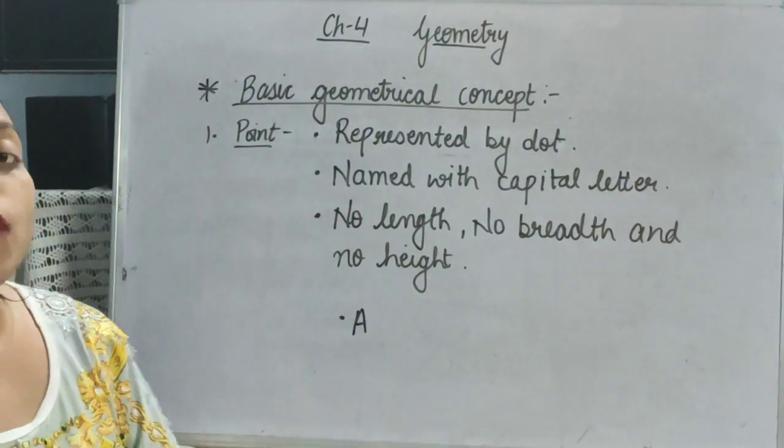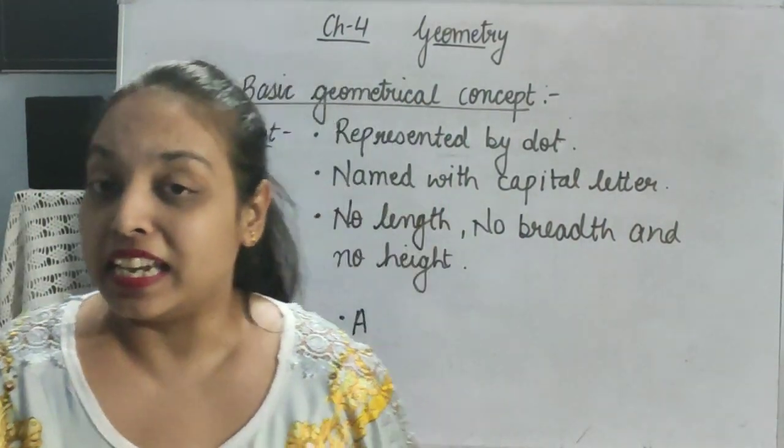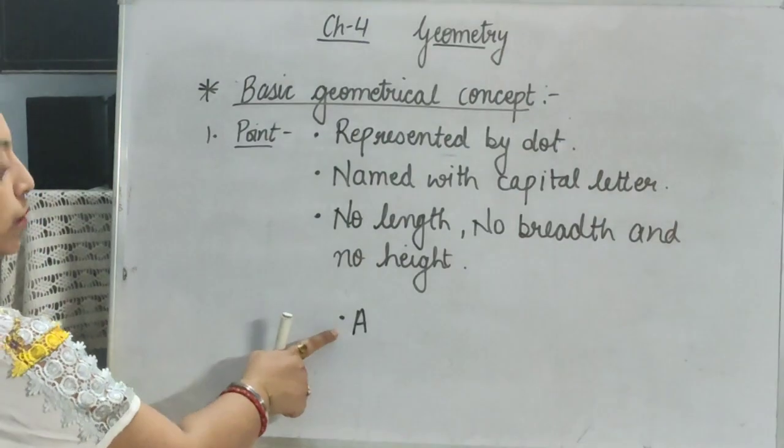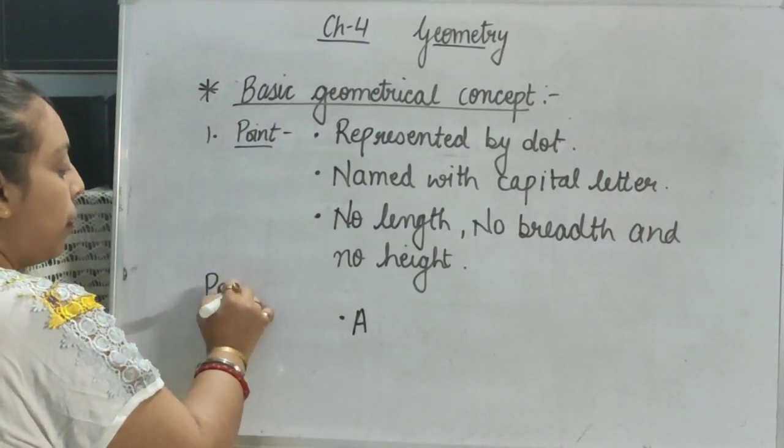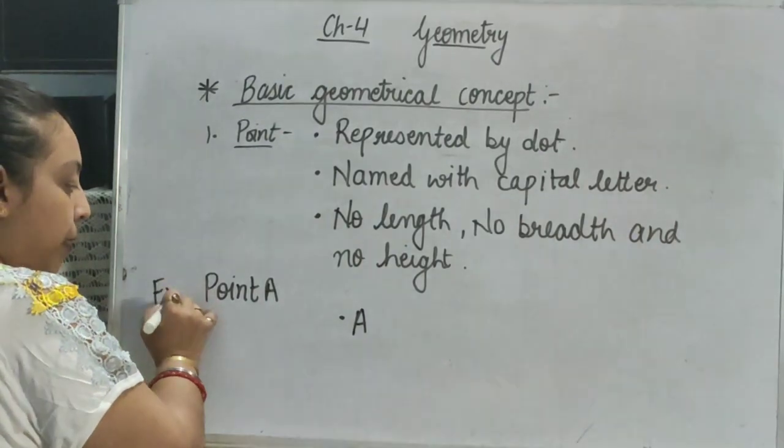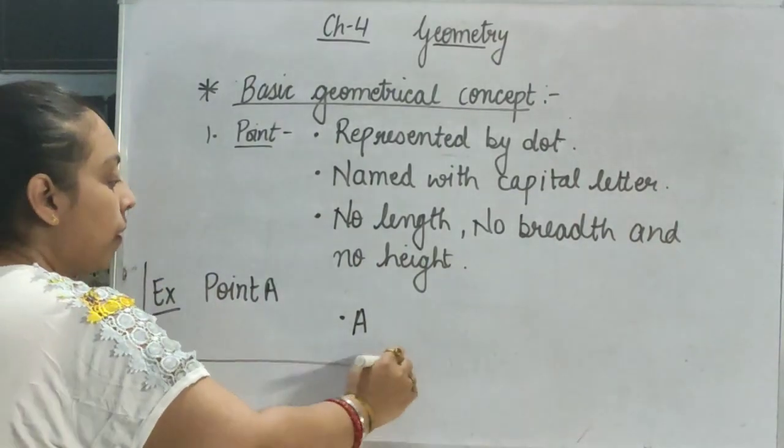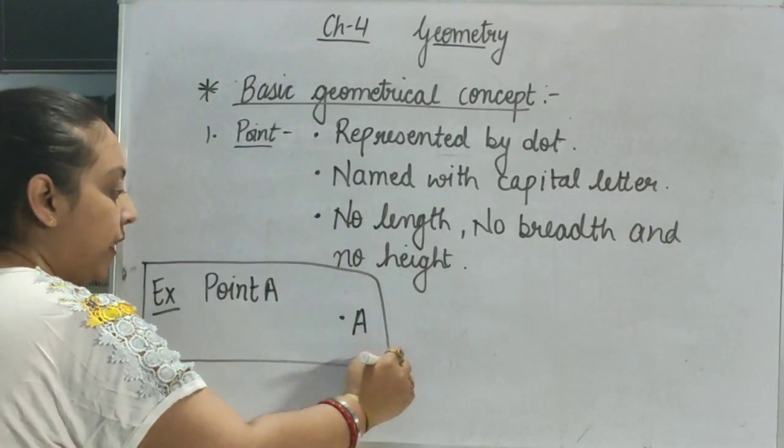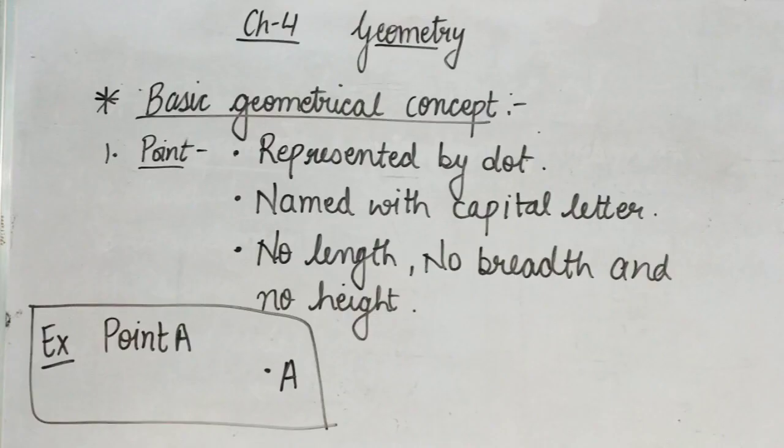Now, how can we call this point? How can we name it? We can name this point as, point A. So this is the example of point. Now you can start writing it in your rough notebook.